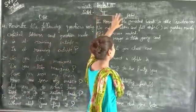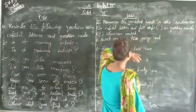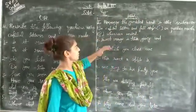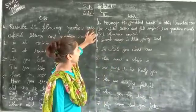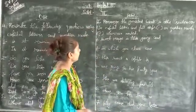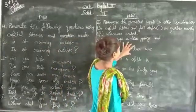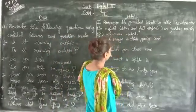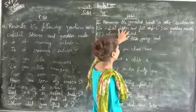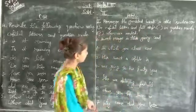Now rearrange the jumbled words in the sentences. After rearranging the sentence, use capital letters and restore a question mark. Then rearrange the word and sentence with capital letters and a question mark.